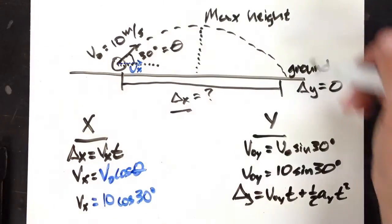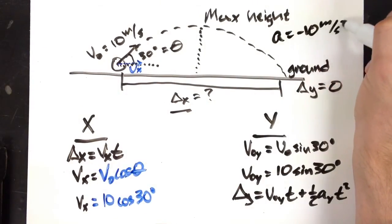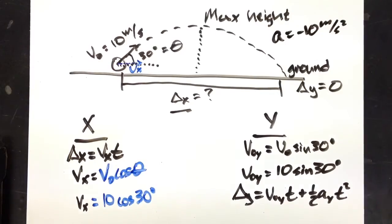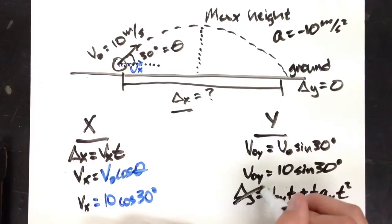And let's say we're on Earth and we can assume that our gravity is negative 10 meters per second squared. Well, I know that I start on the ground and I end on the ground, which means my delta y is 0. This problem becomes dramatically easier after that.